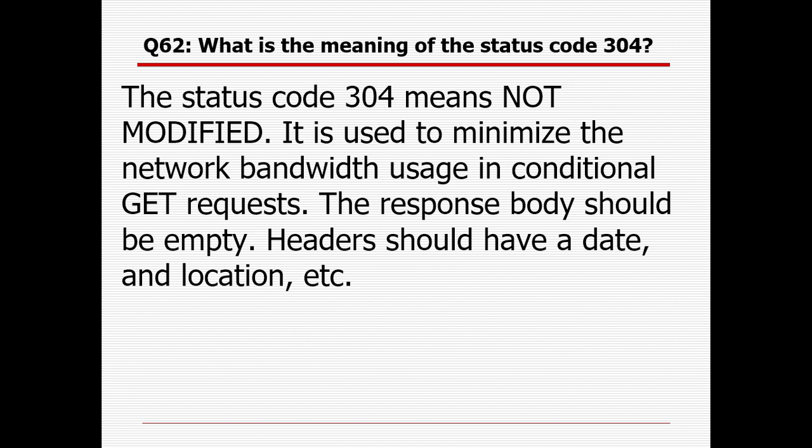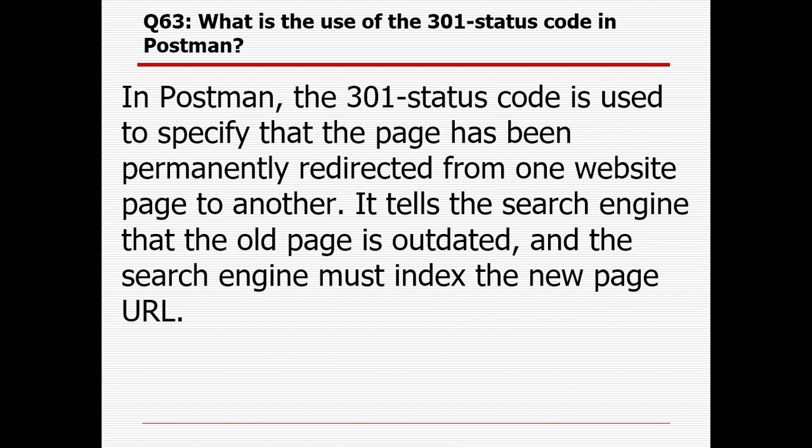What is the meaning of status code 304? Status code 304 means Not Modified. It is used to minimize network bandwidth usage in conditional GET requests — the response body should be empty and headers should have a date and location. What is the use of status code 301? The 301 status code is used to specify that the page has been permanently redirected from one URL to another. It tells the search engine that the old page is outdated and the new page URL must be indexed.